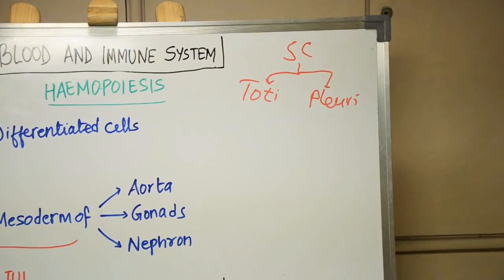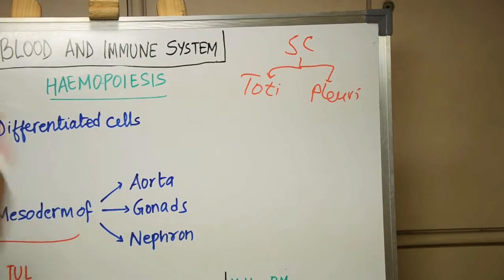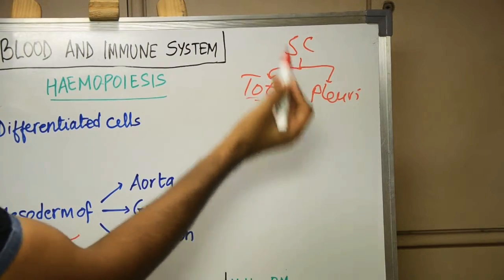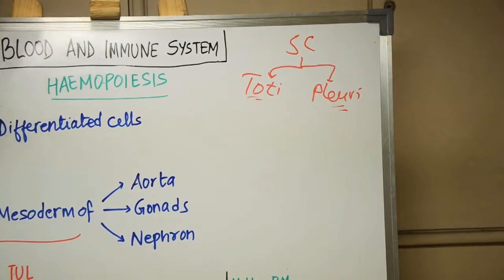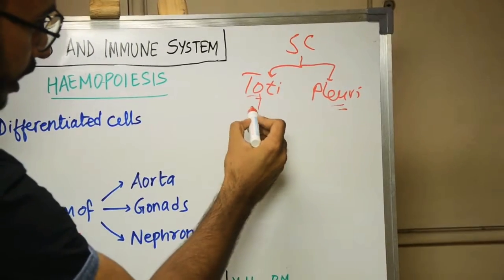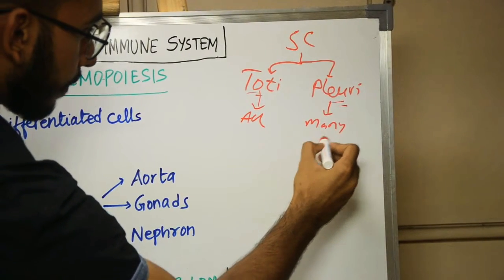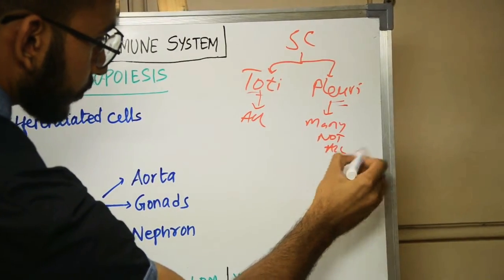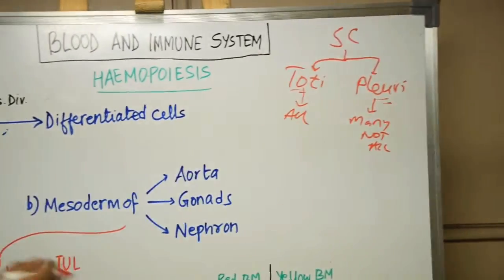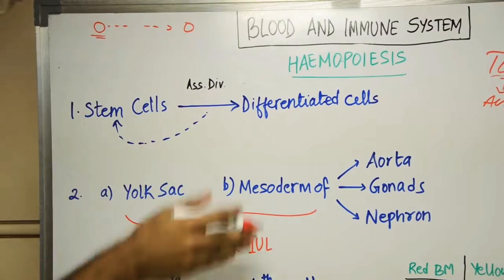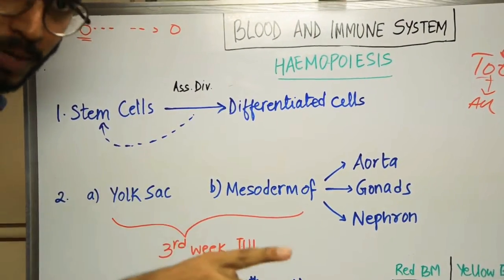Pluripotent stem cells can form many cells but not all cells. Totipotent can form all cells of the body, while pluripotent can form many but not all. This is the main difference between totipotent and pluripotent stem cells. Blood cells are derived from pluripotent stem cells — not totipotent.